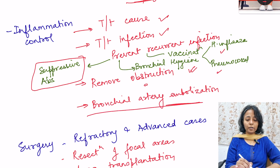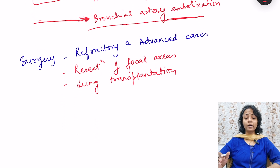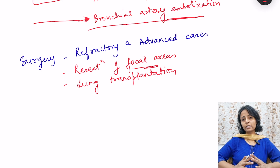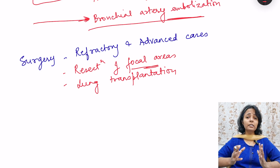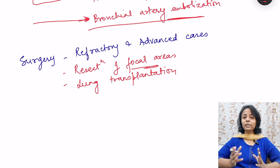In advanced cases, surgery may be required. Two options exist: resection of focal areas if focal bronchiectasis is causing recurrent infection refractory to treatment, or lung transplantation if there is diffuse involvement.